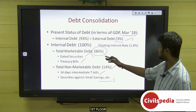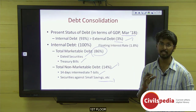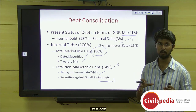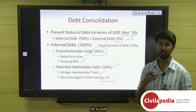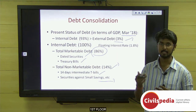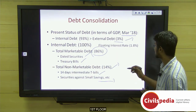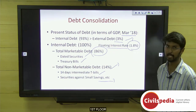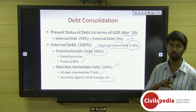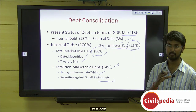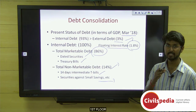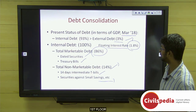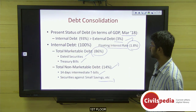Treasury bills and dated securities carry fixed interest rates, so our economy is not very susceptible to external markets. The floating interest rate comprises only 1.8% of total debts, while approximately 98% is at fixed interest rates.